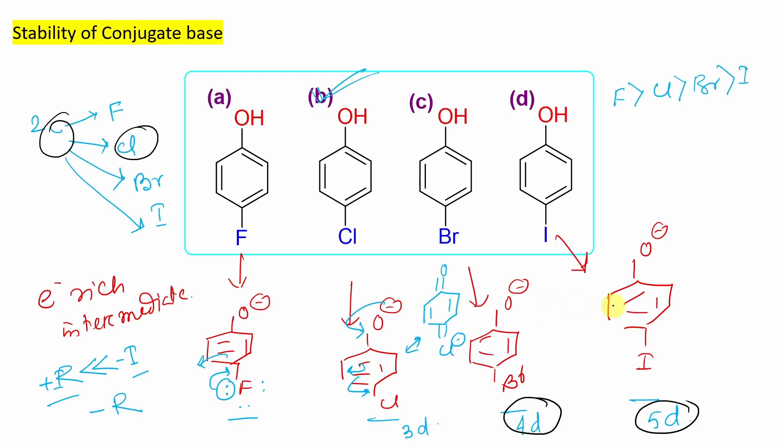Now a next question comes: okay fine, chlorophenol will be maximum acidic. Now if I compare bromophenol versus fluorophenol, who is expected to be more acidic? So obviously bromophenol will be more acidic because in this case 4d can participate in stabilizing. But for fluorine, it is not possible because there is no 2d orbital, it doesn't exist.